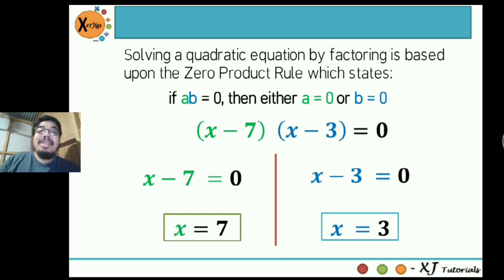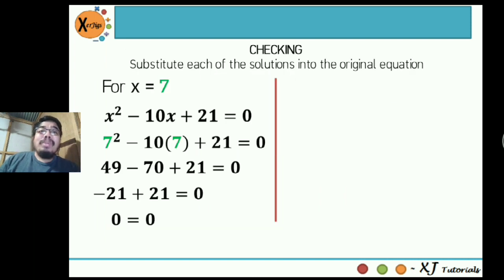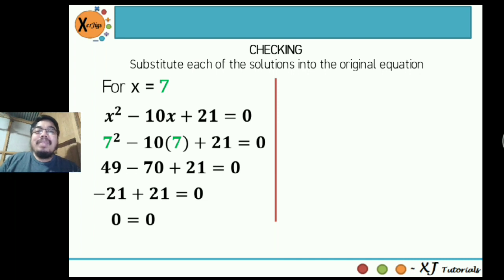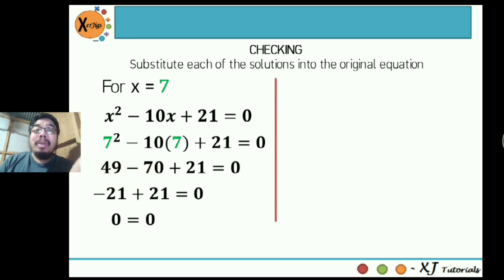Let's check if these values satisfy the quadratic equation. For x = 7, substitute into x² - 10x + 21 = 0: 7² - 10(7) + 21 = 0 → 49 - 70 + 21 = 0. Since the minuend is less than the subtrahend, the difference is negative: -21 + 21 = 0. Therefore, x = 7 is a solution.